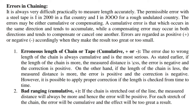2. Bad ranging — cumulative, positive. If the chain is stretched out of the line, the measured distance will always be more and hence the error will be positive. For each stretch of the chain, the error will be cumulative and the effect will be too great a result.